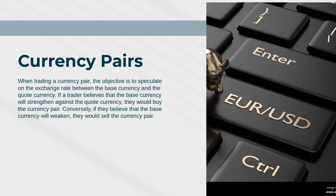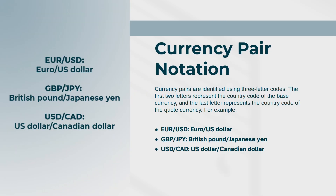When trading a currency pair, the objective is to speculate on the exchange rate between the base currency and the quote currency. If a trader believes that the base currency will strengthen against the quote currency, they would buy the currency pair. Conversely, if they believe that the base currency will weaken, they would sell the currency pair.